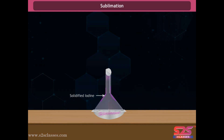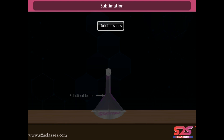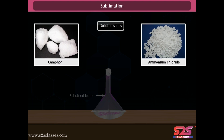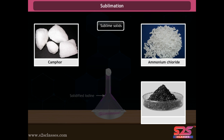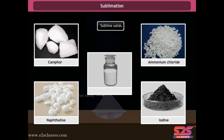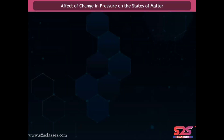Some examples of sublime solids are camphor, ammonium chloride, iodine, naphthalene, and benzoic acid. Effect of change in pressure on the states of matter.